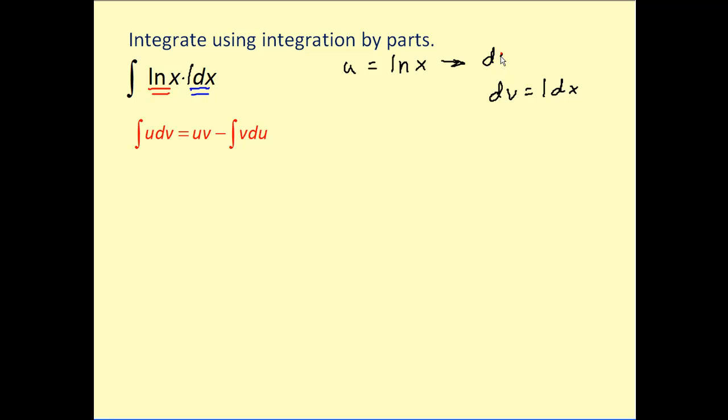So we'll differentiate to find du. We'll get one over x dx. And to find v, we'll integrate both sides here. The antiderivative of one would give us x.